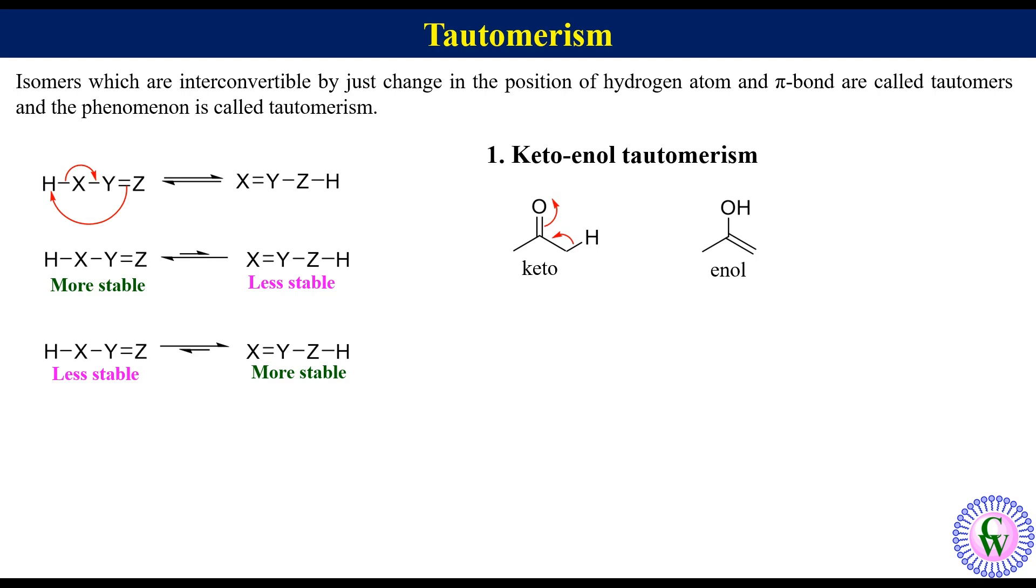Since keto form is more stable than enol so the equilibrium arrow will be like this. Second example is acetylacetone the keto form of which can be drawn like this. These are two more acidic hydrogens. Relocation of one of them like this gives enol form which is stabilized by intramolecular hydrogen bond. This intramolecular hydrogen bond makes enol form more stable than keto. So the equilibrium arrow will be like this.